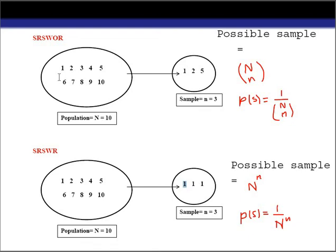These are the differences between the two methods. I hope you understand the main differences between simple random sampling with replacement and without replacement. If you found this helpful, please like, share, and subscribe to my channel. Thank you so much for watching.